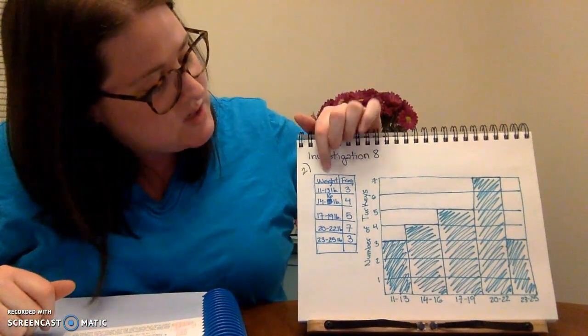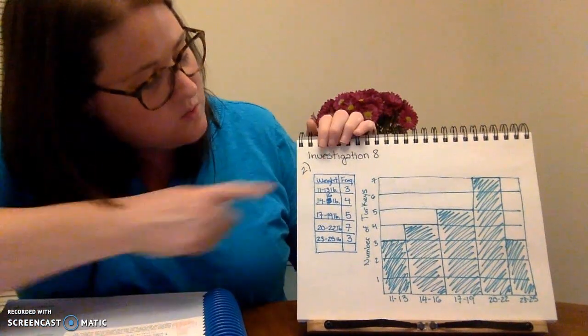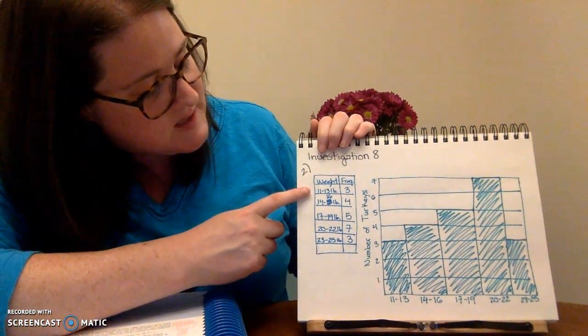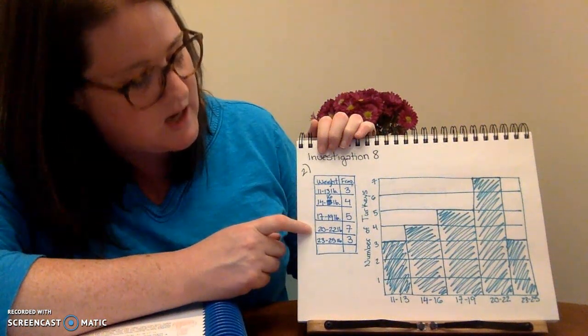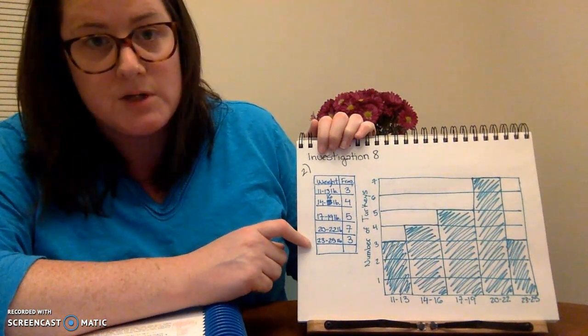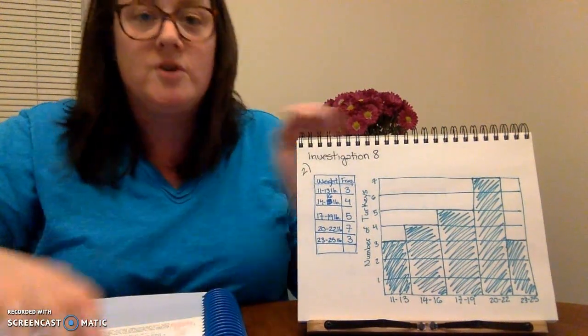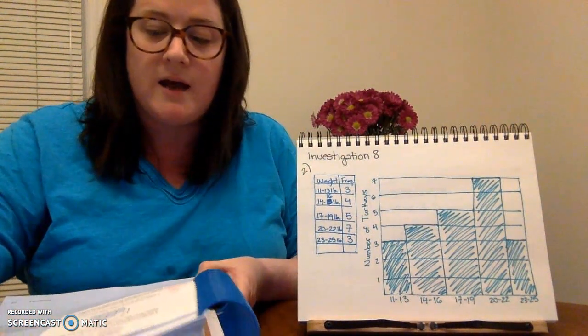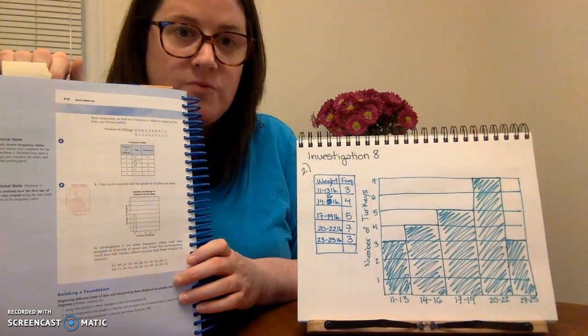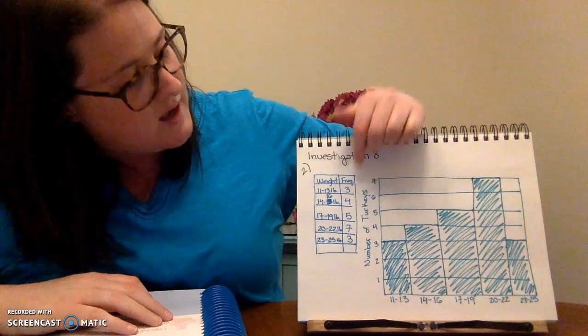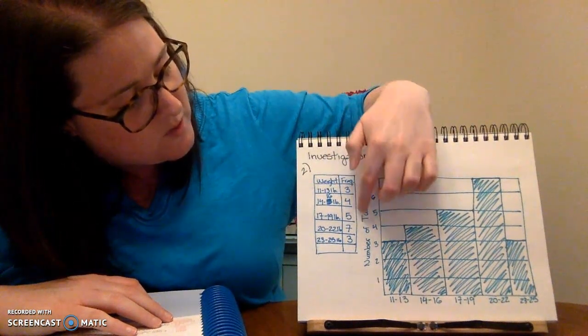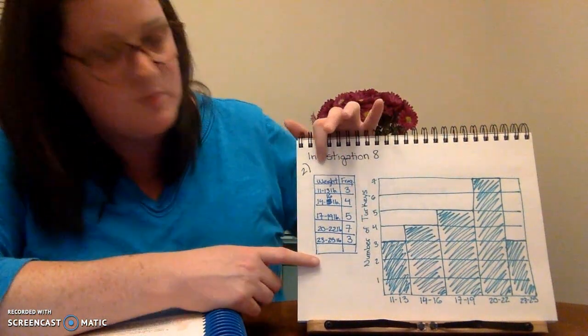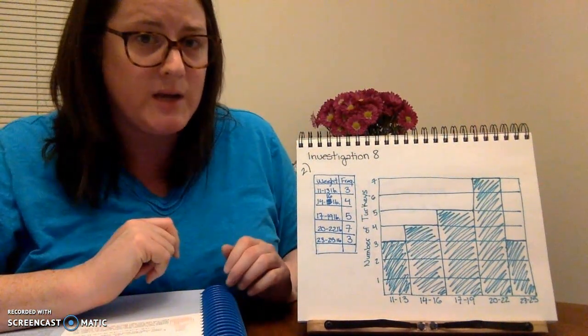Here is my frequency table. I've taken my weight intervals: 11 to 13, 14 to 16, 17 to 19, 20 to 22, and 23 to 25. I've gone through my data on page 418 down here at the bottom, and I've found my frequencies. So 3, 4, 5, 7, 3. This is my frequency table using those weight intervals.